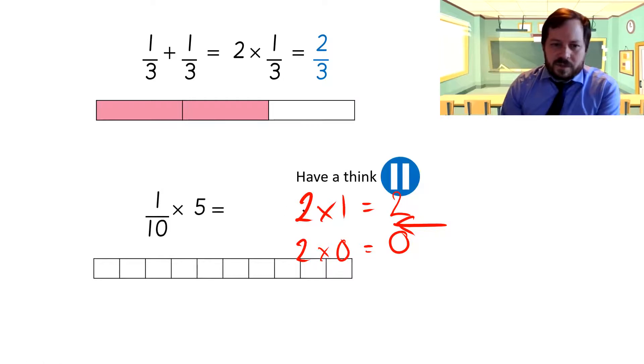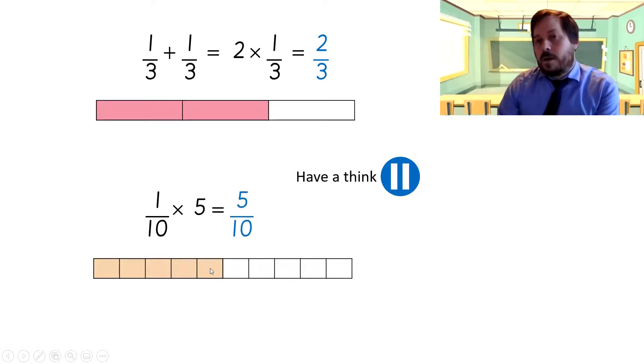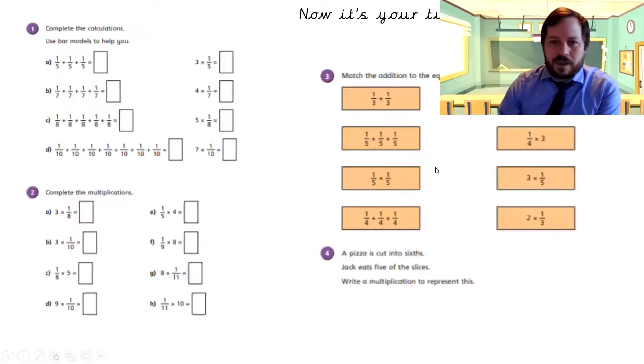This is kind of why it works, but it's a nice thing to understand. So here you go. Have a look at this one. See if you can work it out. One-tenth times five. One-tenth times five. So that's one, two, three, four, five-tenths. So the answer is five-tenths. Which is the same as a half.